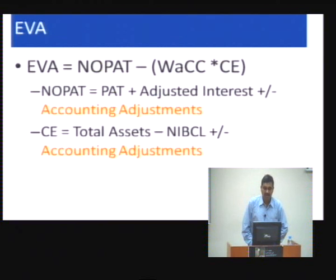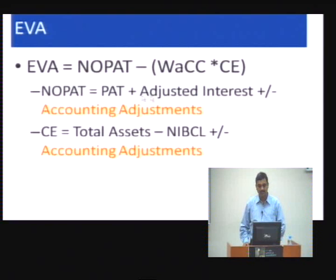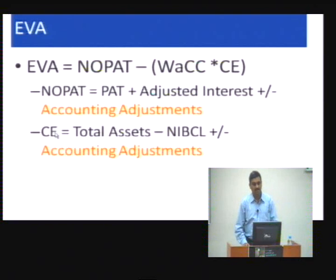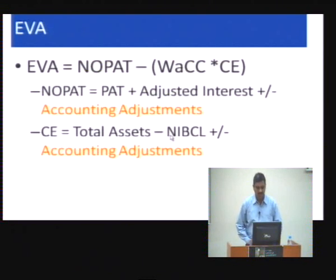EVA, therefore, as mentioned, is NOPAT minus WACC multiplied by capital employed. NOPAT is profit after tax plus adjusted interest, plus or minus the accounting adjustments. Similarly, capital employed is total assets minus NIBCL (non-interest bearing current liabilities), plus or minus the accounting adjustments. So the focus is on accounting adjustments.